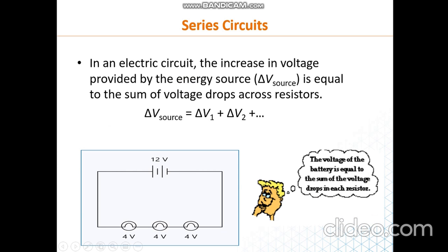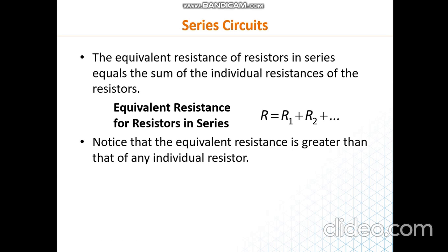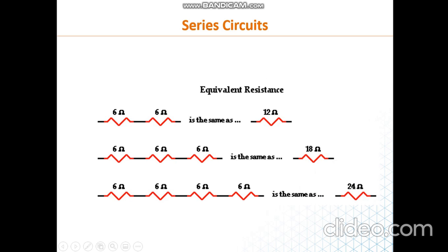The voltage of the battery is equal to the sum of the voltage drops across each resistor in series. If you are interested in the total resistance or equivalent resistance in a series circuit, you apply this simple formula: just add the value of the resistance of each resistor individually. For example, 6 ohms and 6 ohms in series gives an equivalent resistance of 12 ohms. Adding a third gives 18 ohms, and four gives 24 ohms.